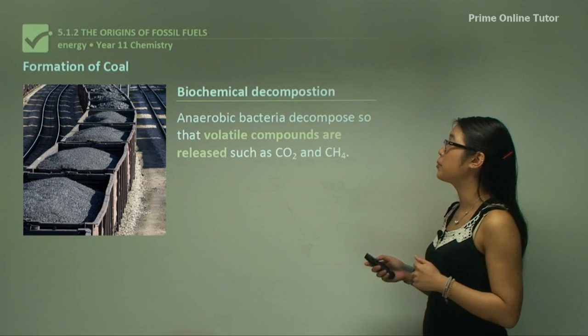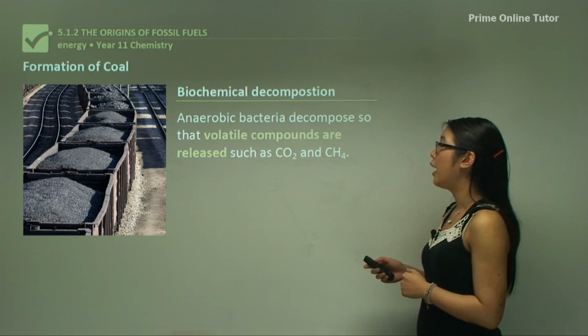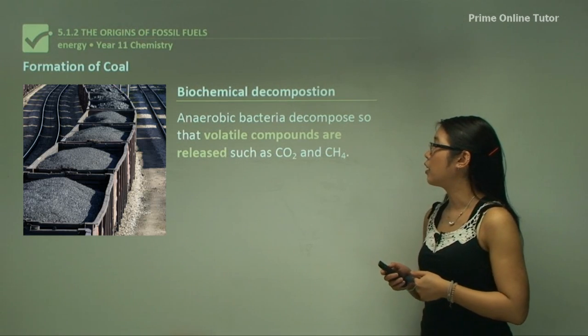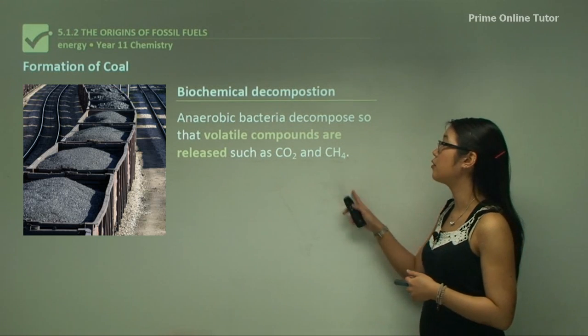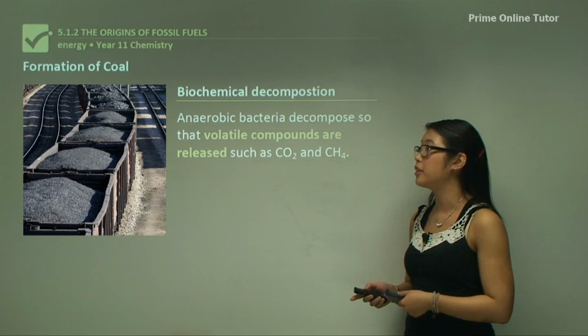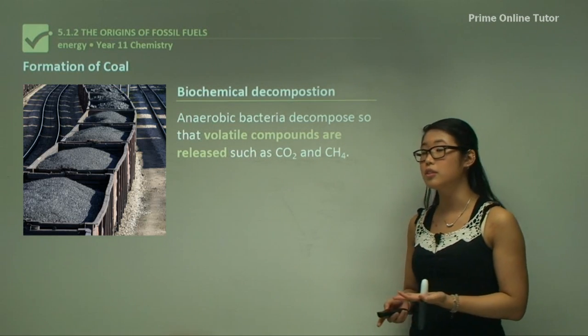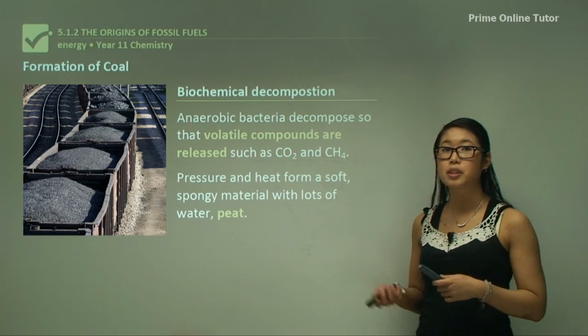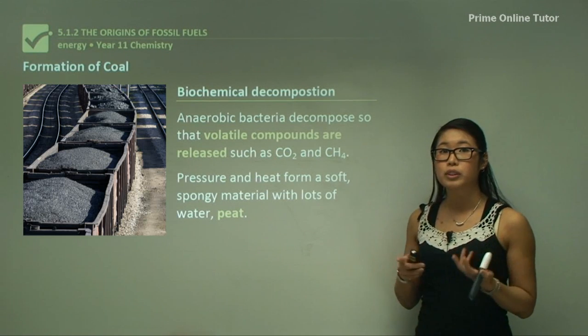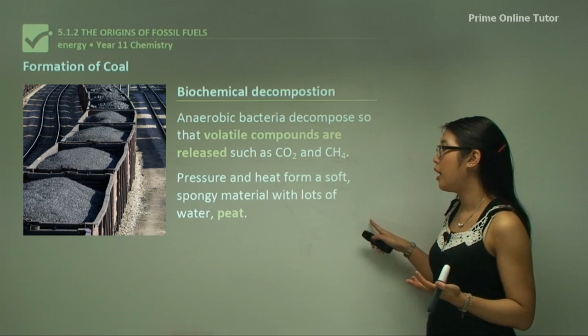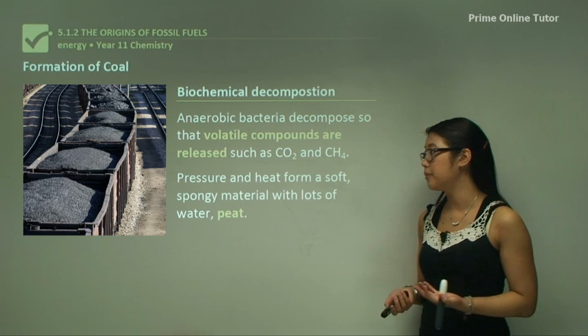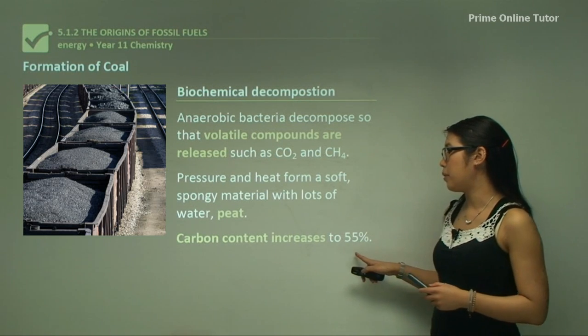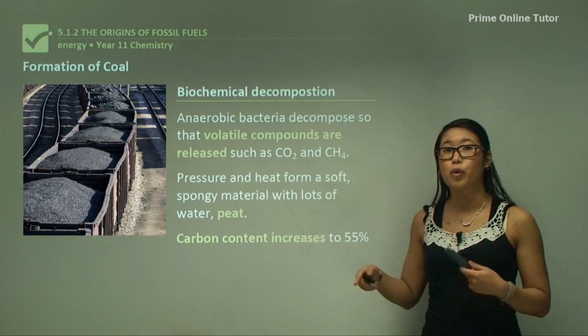Biochemical decomposition is the first part of forming coal and requires anaerobic bacteria to decompose the dead material into volatile compounds such as CO2 and CH4. Anaerobic bacteria means no oxygen is used because aerobic means oxygen is required. Pressure and heat form a soft spongy material from the old dead plants and animals called peat. The carbon content increases to about 55 percent by removing water.